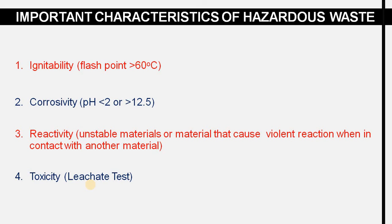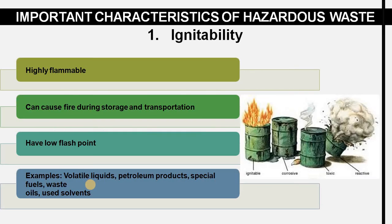Now let us see the important characteristics of hazardous waste. There are four important characteristics: ignitability, corrosivity, reactivity, and toxicity. Ignitability has a flash point greater than 60 degrees Celsius. Corrosivity has a pH less than 2 or greater than 12.5. Reactivity refers to unstable materials that cause a reaction when in contact with another material. Toxicity is determined by a leachate test.